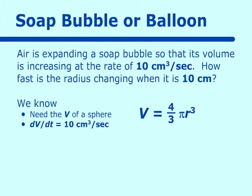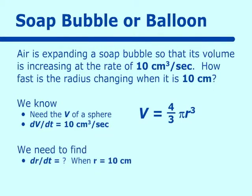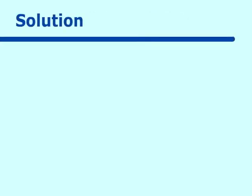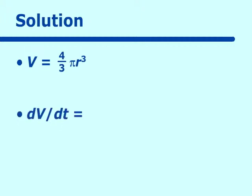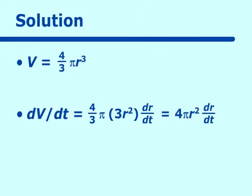We need to find the change in rate over the change in time, so that's dr/dt when r is equal to 10. We know the volume formula is V = 4/3 π r³. We take the derivative and dV/dt, remembering we're taking it with respect to t, becomes 4/3 π times 3r² dr/dt, which simplifies to 4π r² dr/dt.